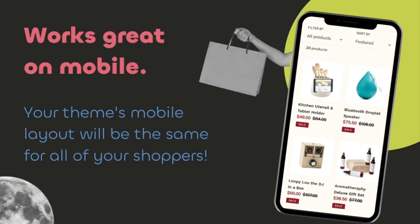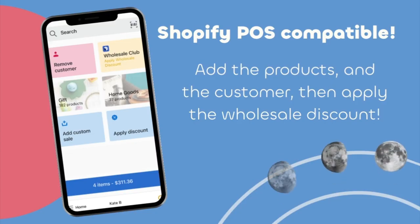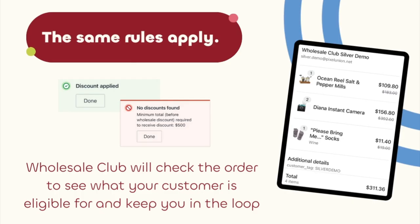Wholesale Club works great on mobile — your theme's mobile layout will be the exact same for all of your shoppers. Wholesale Club is also Shopify POS compatible. You can add products, then add the customer, and then apply the wholesale discount. Wholesale Club will check the order to see what your customer is eligible for and keep you in the loop.